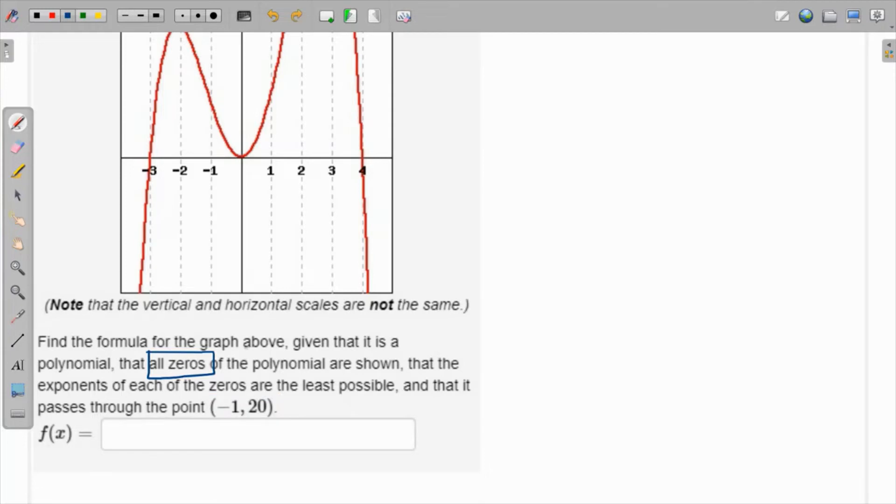The exponent of each zero is the least possible, and it passes through the point (-1, 20). So let's first write what are the roots. The roots as seen from the graph are the points where the curve intersects the x-axis: x = -3, x = 0, and x = 4.